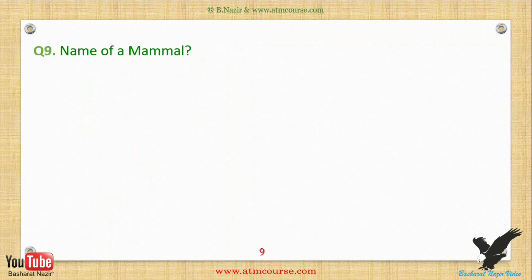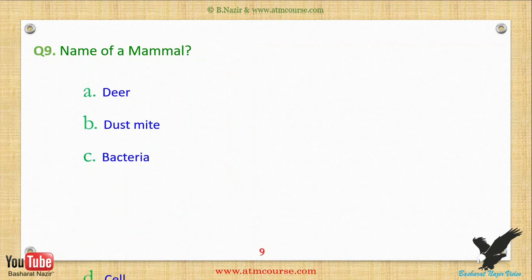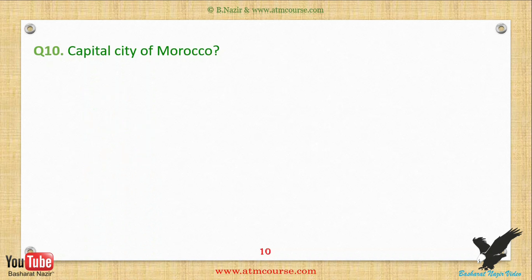Question nine: Name of a mammal — choose from one of these answers. Question ten: choose from one of these answers.